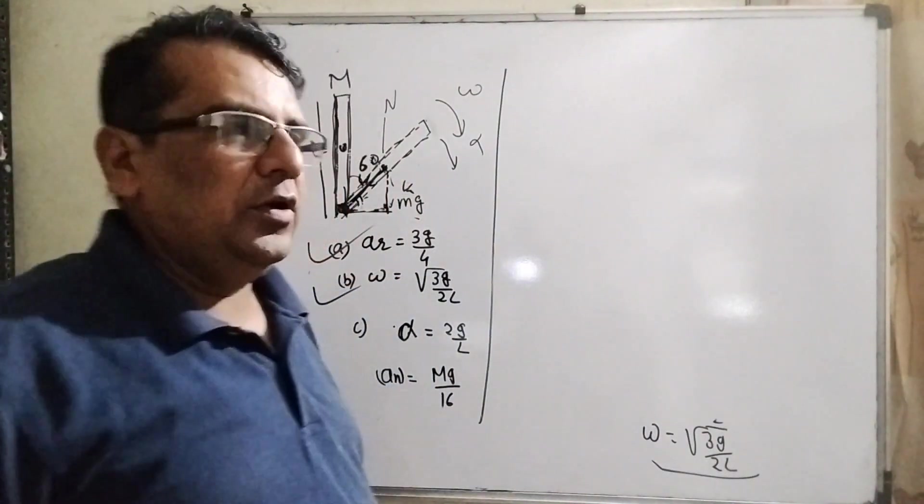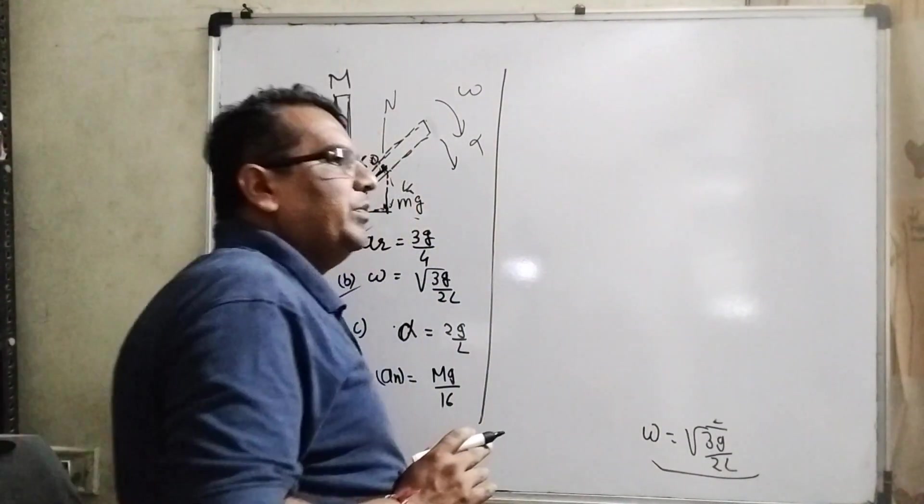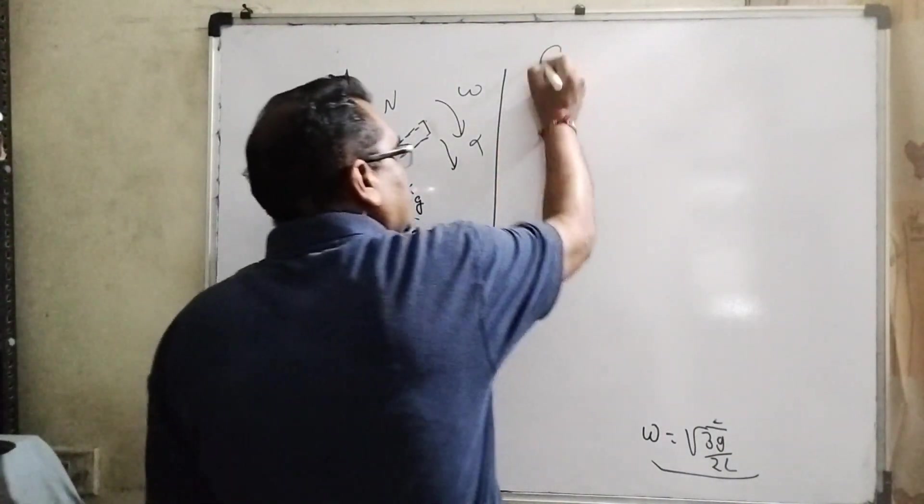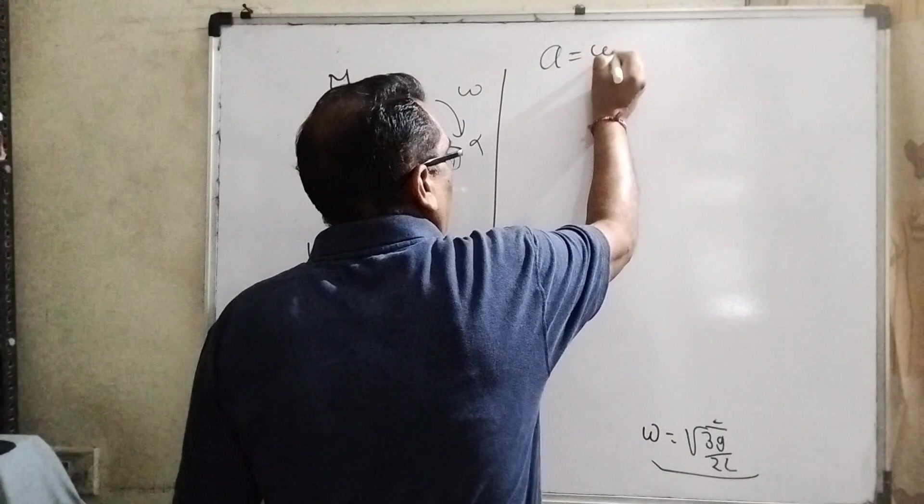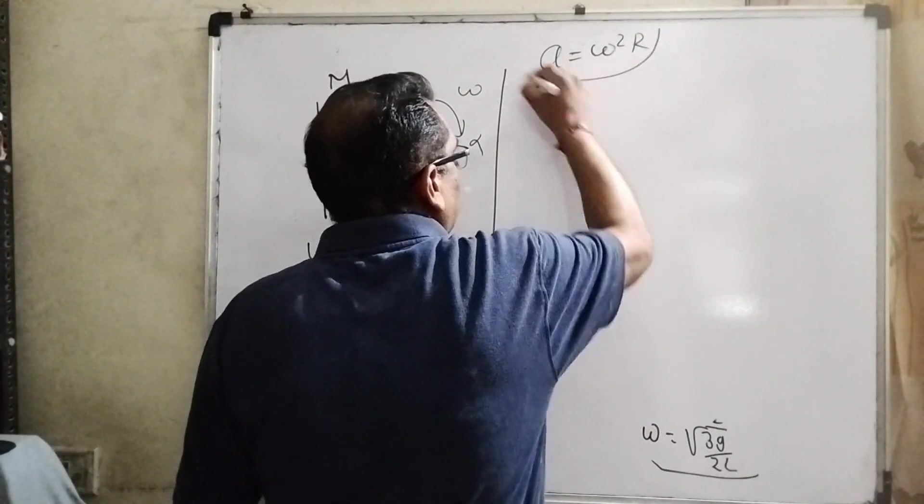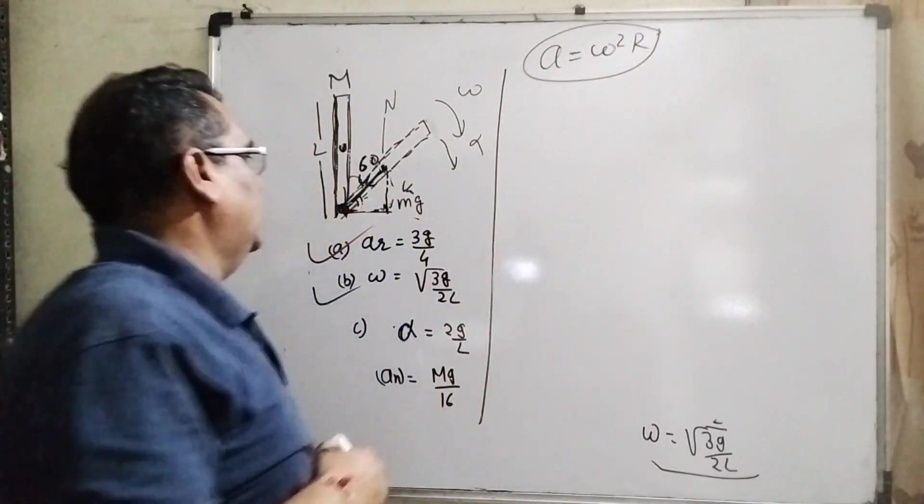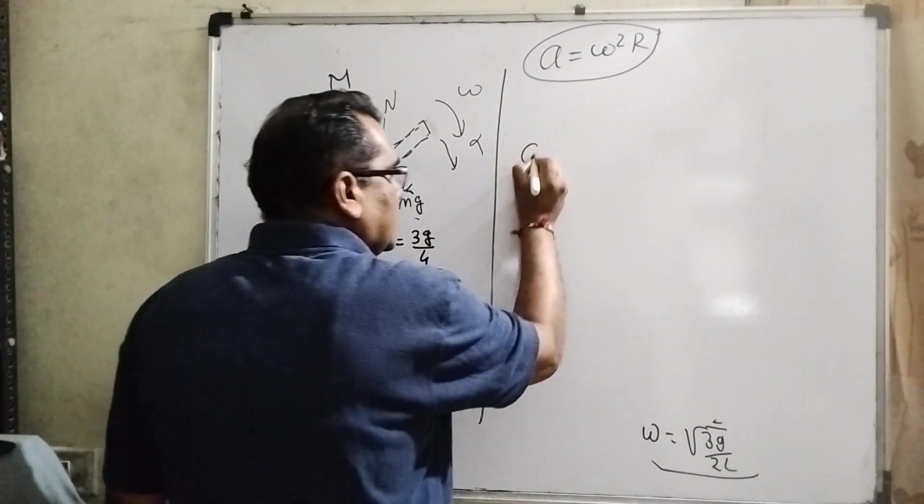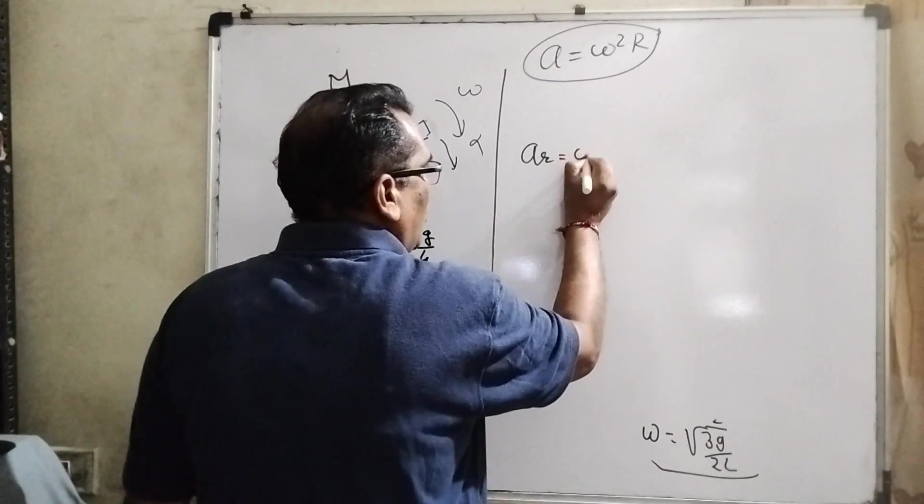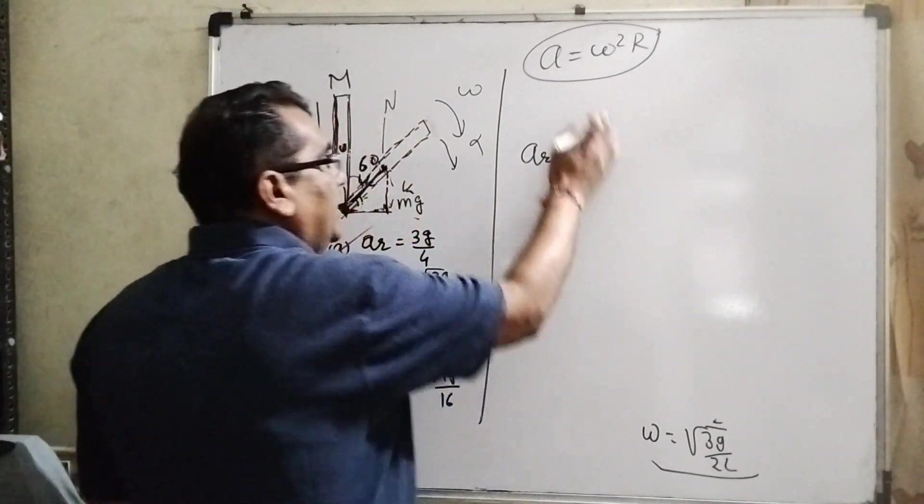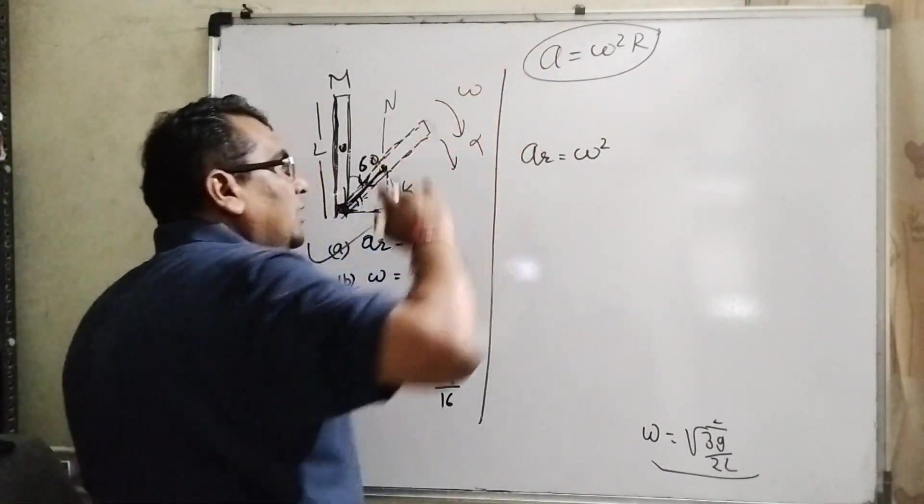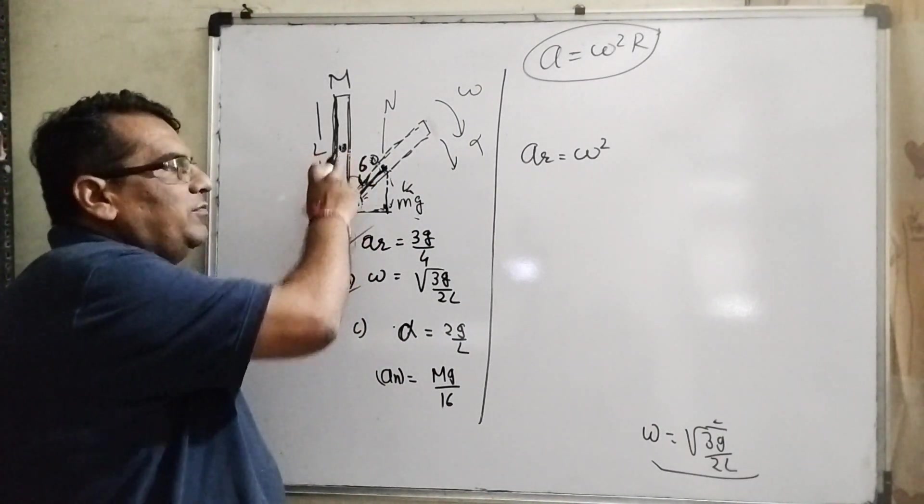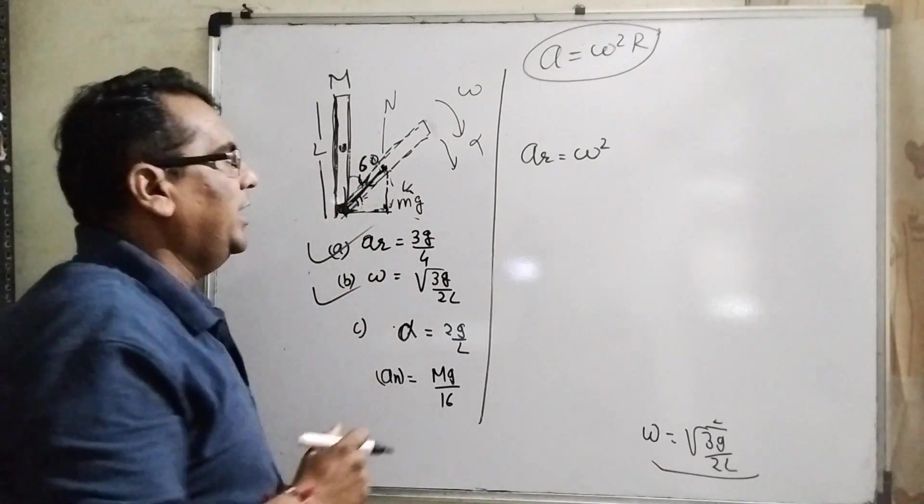Now, you are well known about the relation between linear acceleration and angular velocity. That is the formula A equal to omega squared R. This formula we have to use for linear acceleration or radial acceleration. Then radial acceleration equal to omega squared and distance in the place of R.